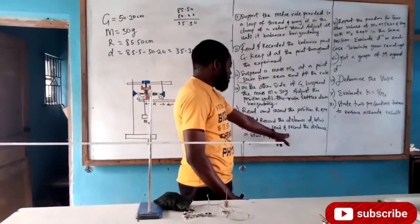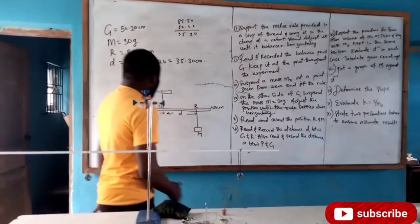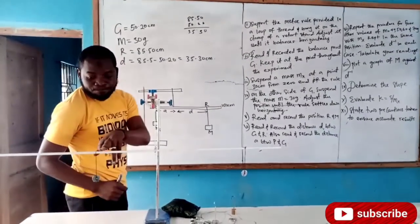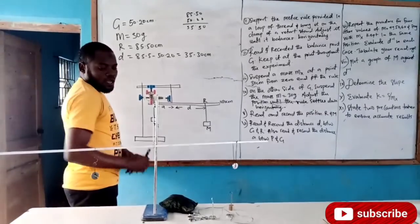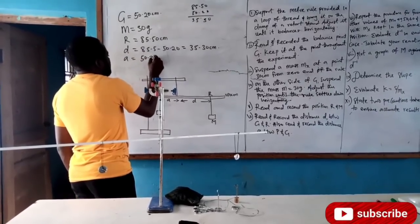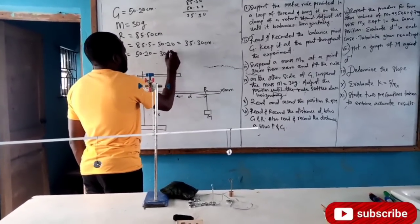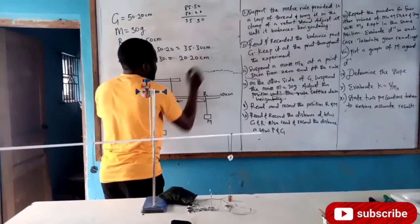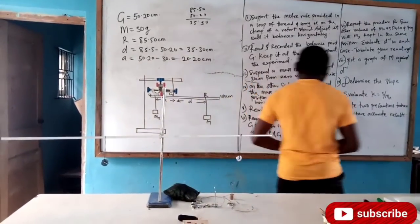The next question says: record the distance A between P and G. From zero to P is 30 cm, and from zero to G is 50.20. So for us to get the value for A, we have 50.20 minus 30 cm, which gives us A = 20.20 cm. We have now determined the values for both D and A.